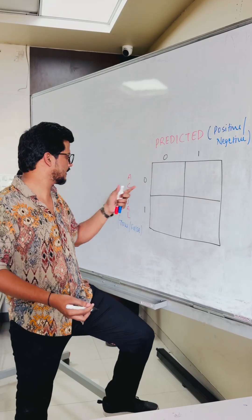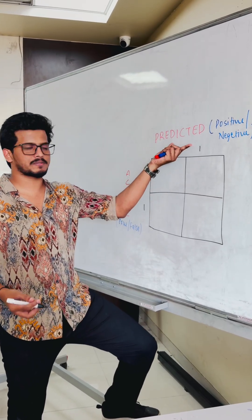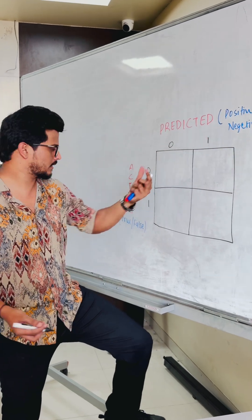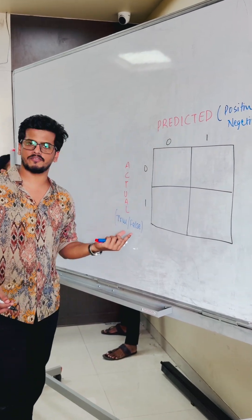We have predicted class and the actual class. Predicted class comes from positive and negative. And in actual class, true and false.